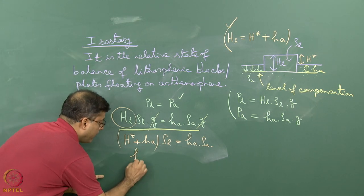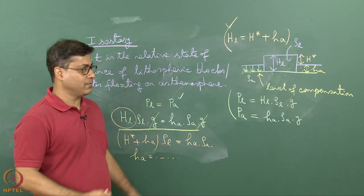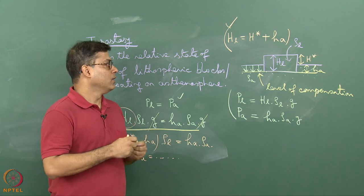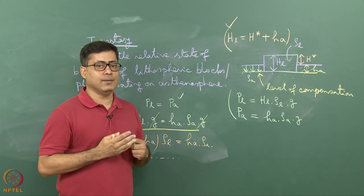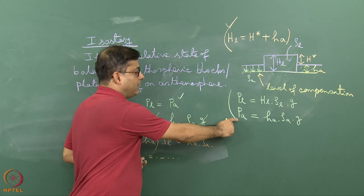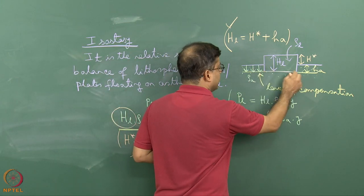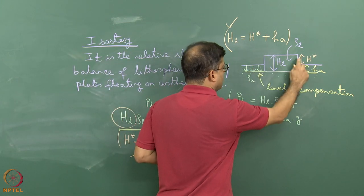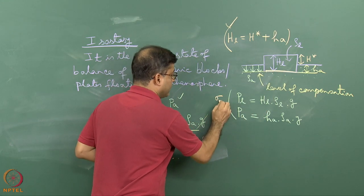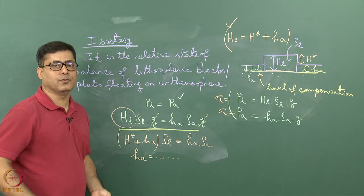This is the starting point of looking at isostasy in terms of stress. The stress issue is involved when we say pressure P_L and P_A — there is another term for pressure, which is stress: the stress exerted by this column on the surface. So we can also write these as sigma_L and sigma_A.